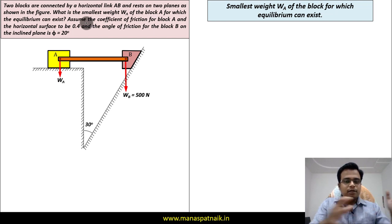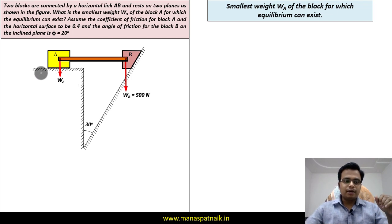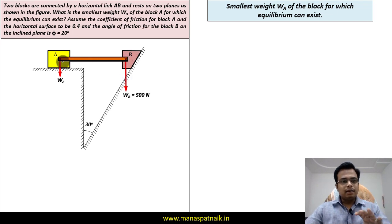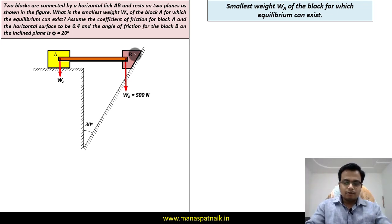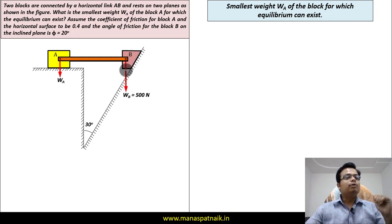Assuming that you've read the description, let me explain this entire arrangement briefly. There are two blocks — block A and block B. Block A is on a horizontal plane and block B is on an inclined plane. These two blocks are connected to each other with a link called link AB. The natural tendency of block B is to slide down the plane, so friction acts up the plane. We want this block not to slide, meaning we want the link to remain absolutely horizontal so that block B stays in its current position.